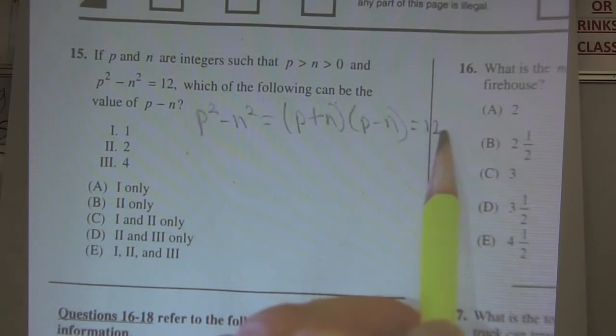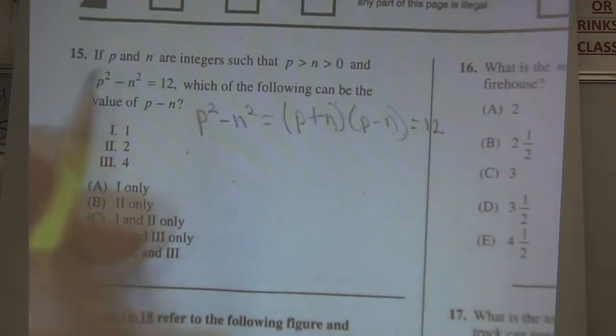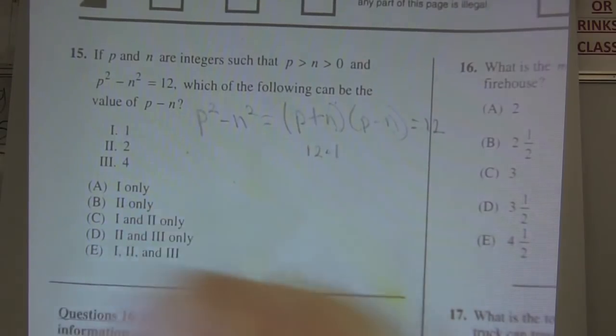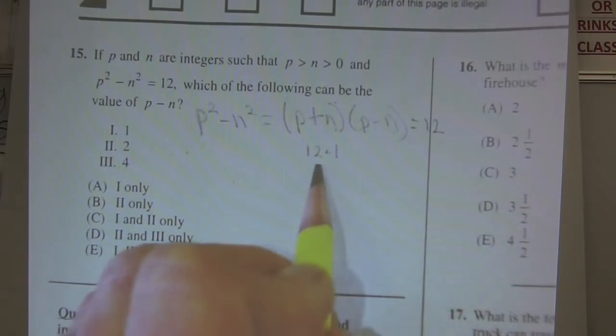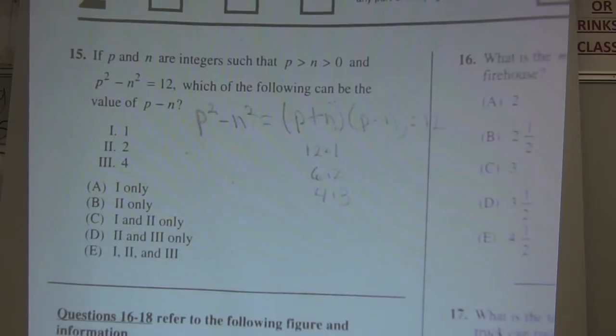So think of two numbers that you add together and the same two numbers you subtract together can get me 12. Let me list the factors of 12: 12 times 1, now remember they're positive so I don't have to worry about negative times a negative, 6 times 2, and then 4 times 3. There's my only factors I can get for 12.